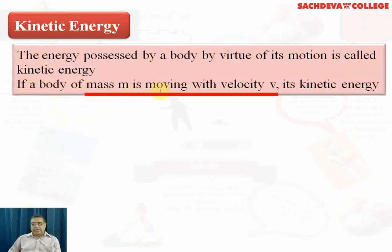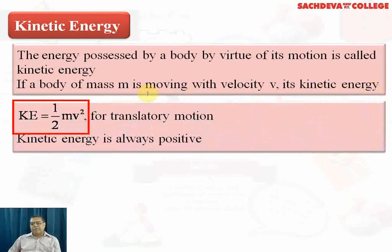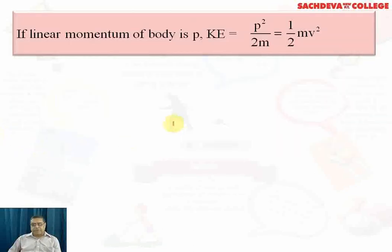If a body of mass m is moving with velocity v, then its kinetic energy is calculated by the formula half mv squared — that is for translatory motion. Kinetic energy is always positive.